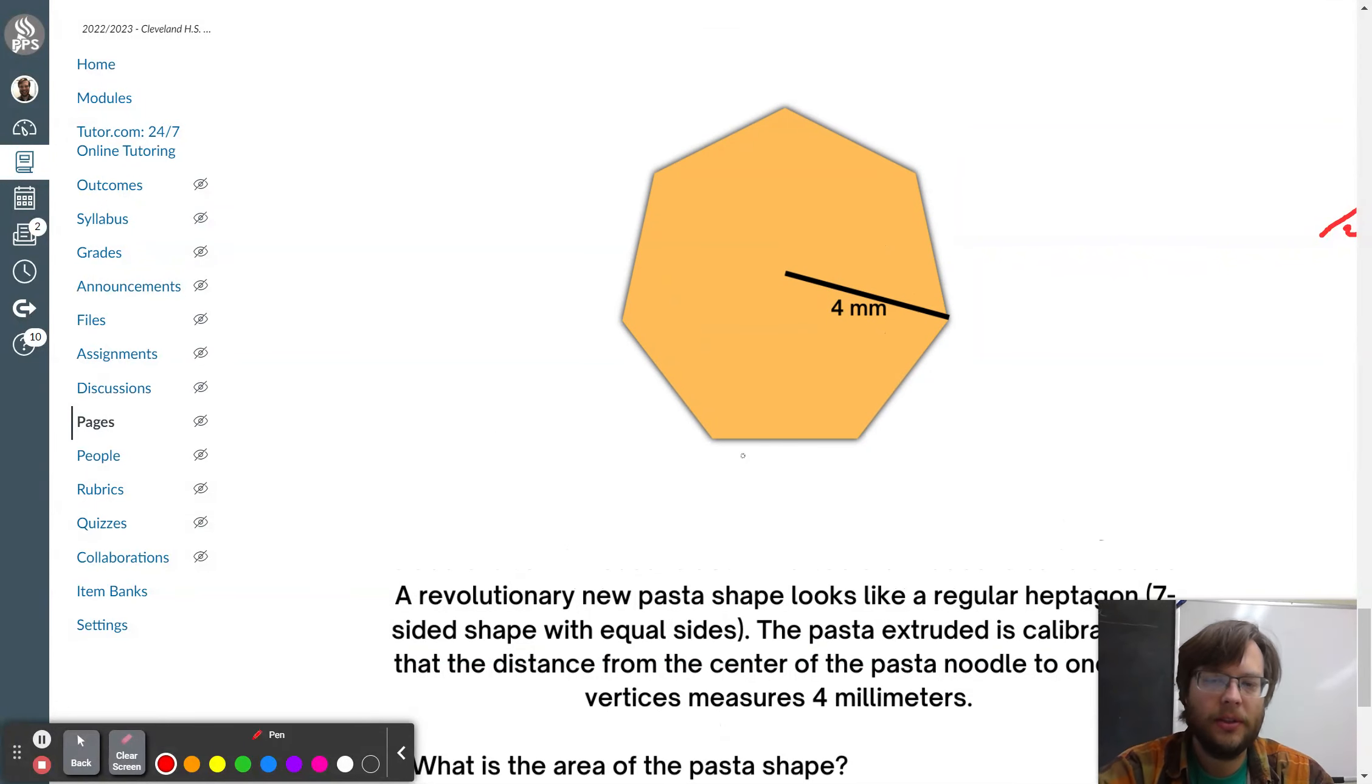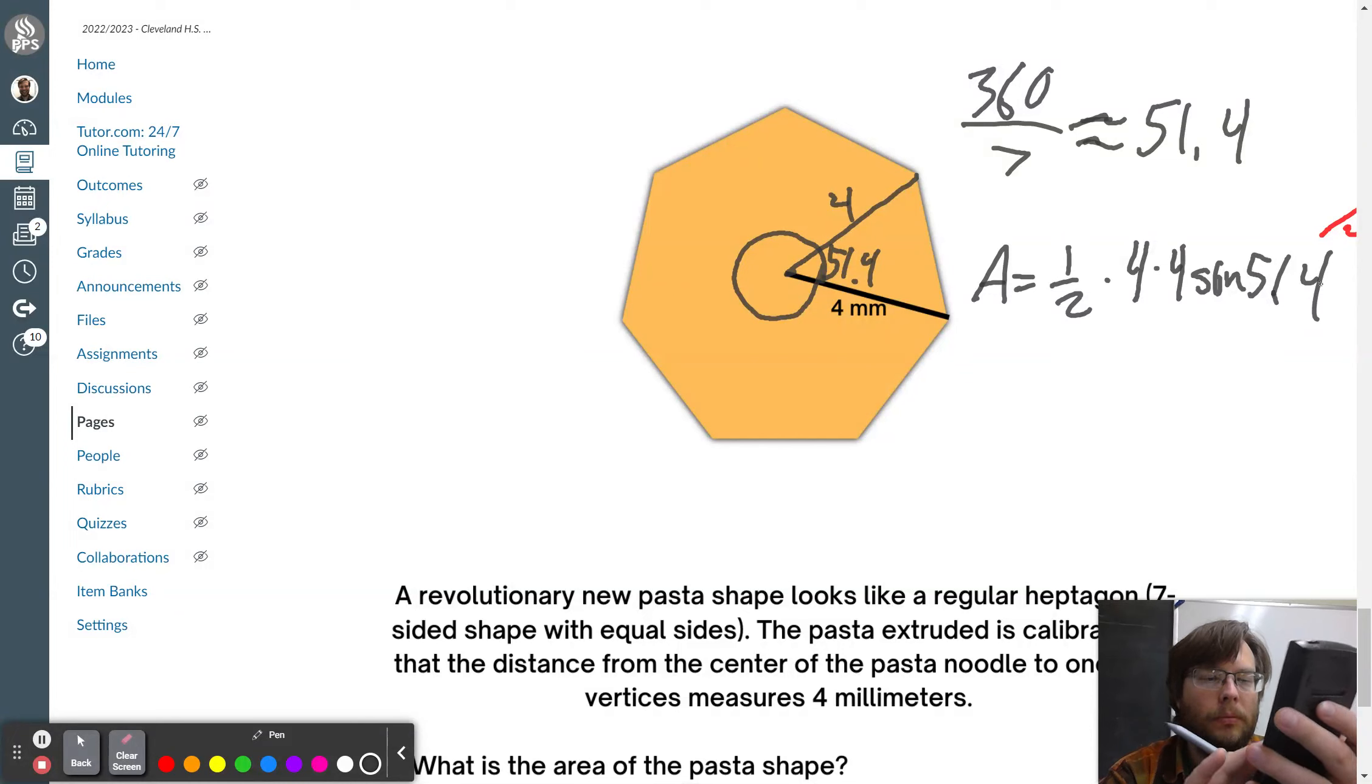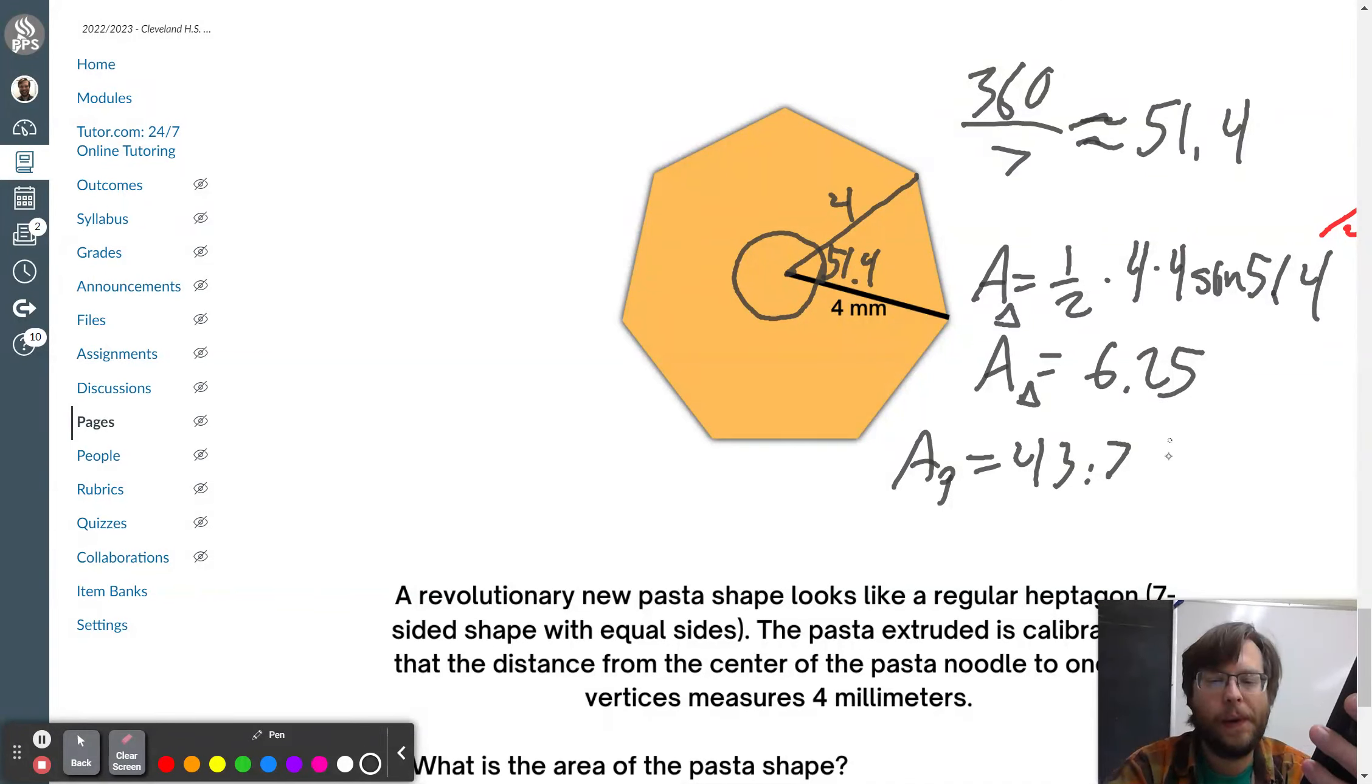All right, here we go. Heptagon area of the pasta. And would I eat this pasta? The answer to the second question is obvious. Yes, I would eat this pasta. A heptagonal pasta would be sweet. Here is 4 millimeters. And we know that it is a 7-sided pizza. So, we can go 360 cut into 7. It's not a nice number, but it's about 51.4. So, that's the angle right here. Then the area is 1 half times A times B times the sine of C. And so, the area of one little chunk is 6.25. So, this is just the area of a triangle. And so, then the area of the pasta is that times 7. 43.77 millimeters squared. And that's it for the area of sheets.